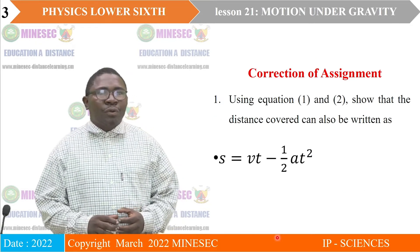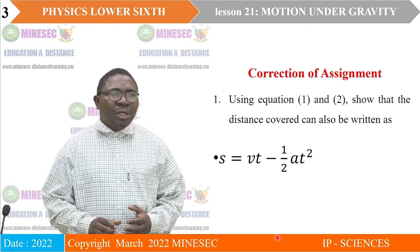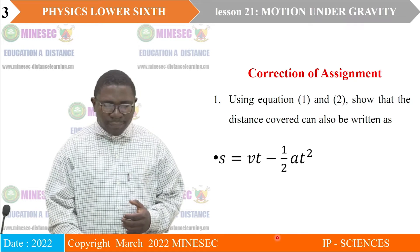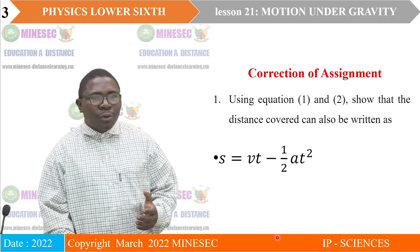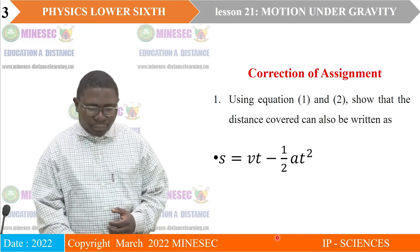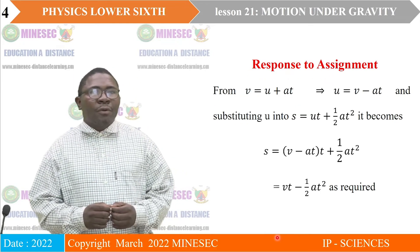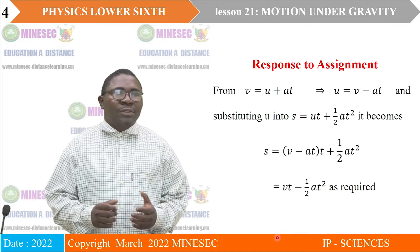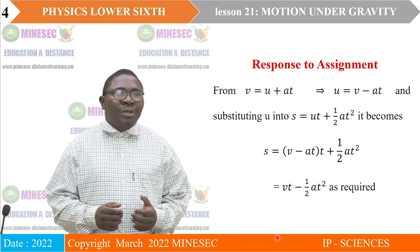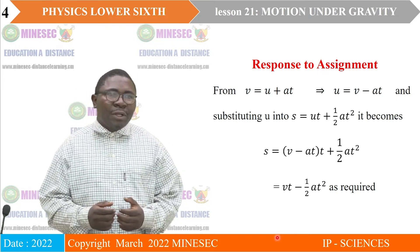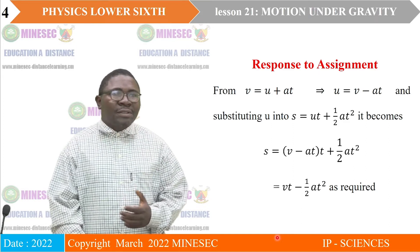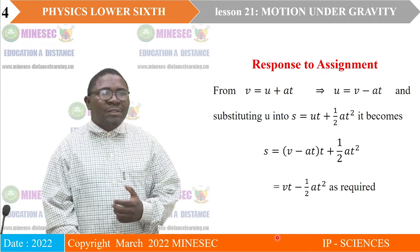Using equation 1 and equation 2, show that the distance covered can also be written as what we are seeing on the board. From V equals U plus AT, which is our equation 1 that we had in the previous class, we can make U the subject of the formula. And substituting that into the equation for S, we have it as seen below.